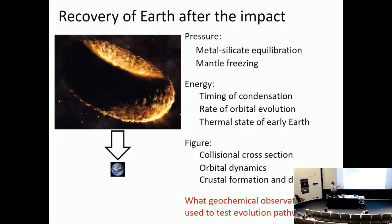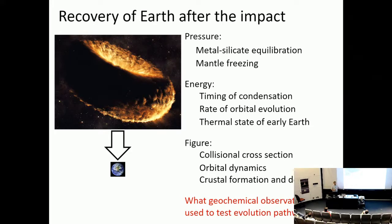There are various aspects of this period of Earth's evolution that have not been considered, with very interesting geochemical predictions we can make. What I'm working on now is trying to link the subsequent evolution after the moon-forming impact to observable geochemical signatures that can provide additional constraints on the moon-forming impact itself. Thank you.